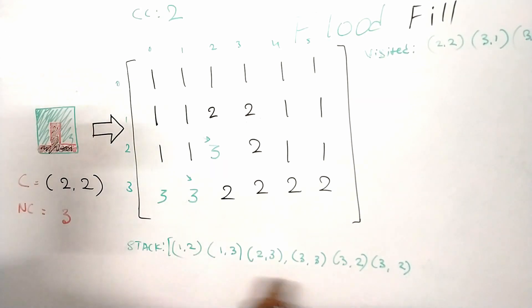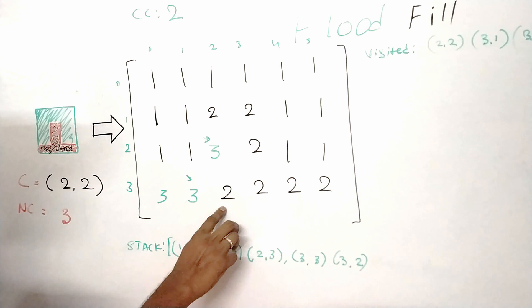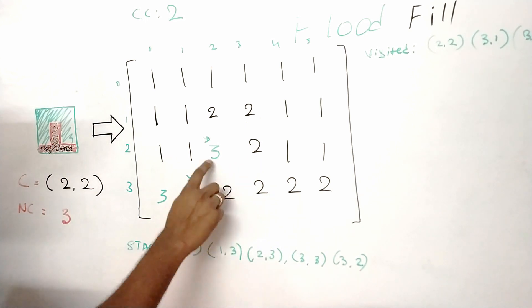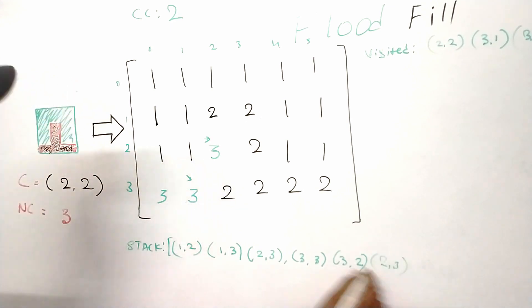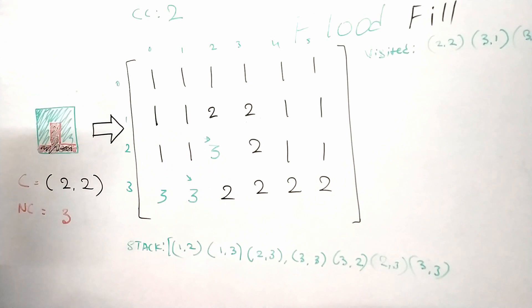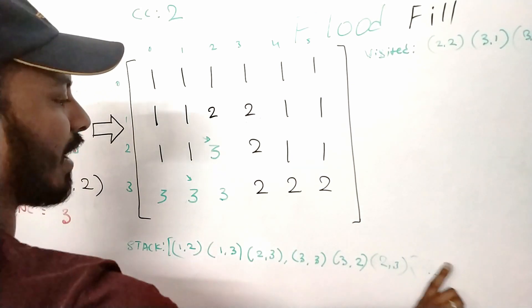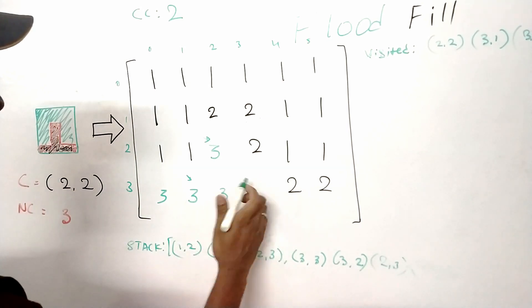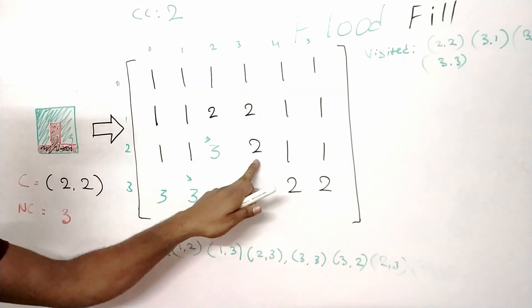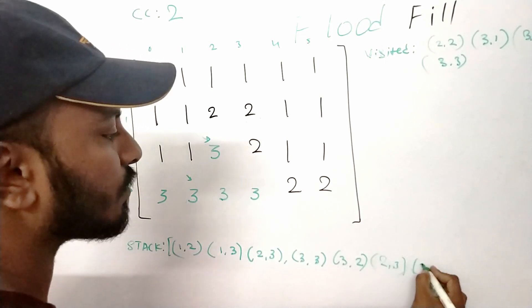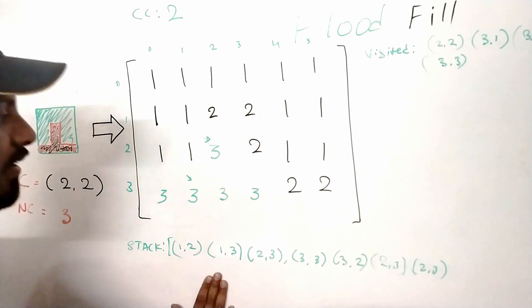Since there are no valid neighbors at three comma zero, we go back to the stack and go to three comma two. We find its valid neighbors: two comma three and three comma three, since the other cells have already been changed. We replace three comma two's value. Then we take three comma three from the top of the stack, replace its value, add it to visited, and find its valid neighbors: two comma three and three comma four.